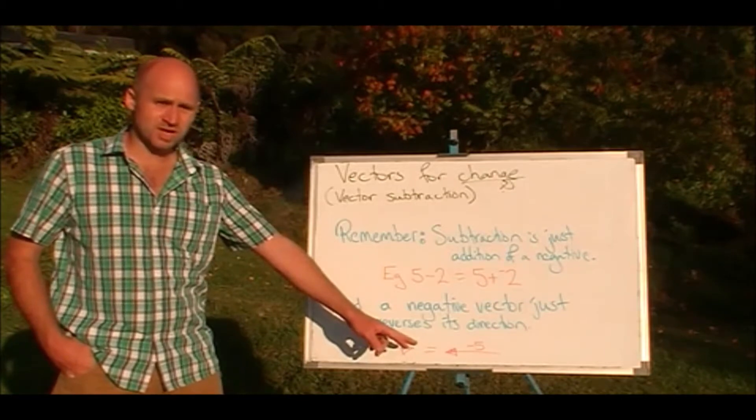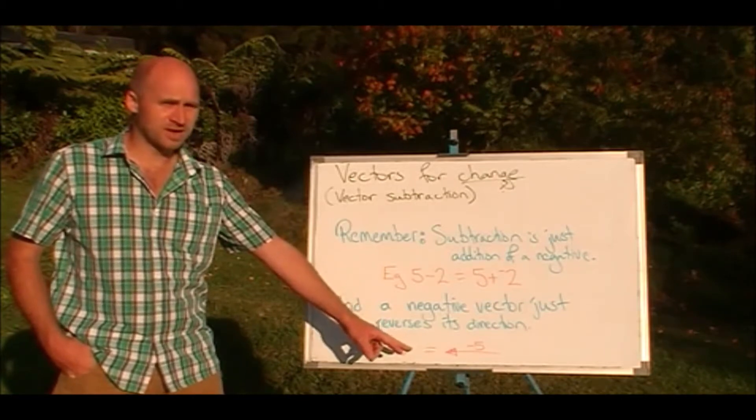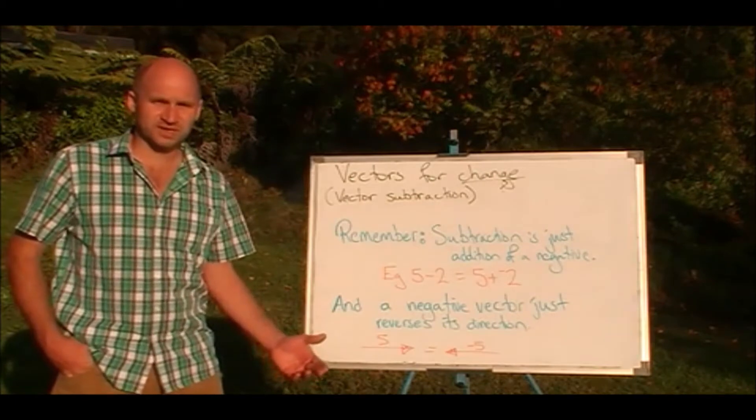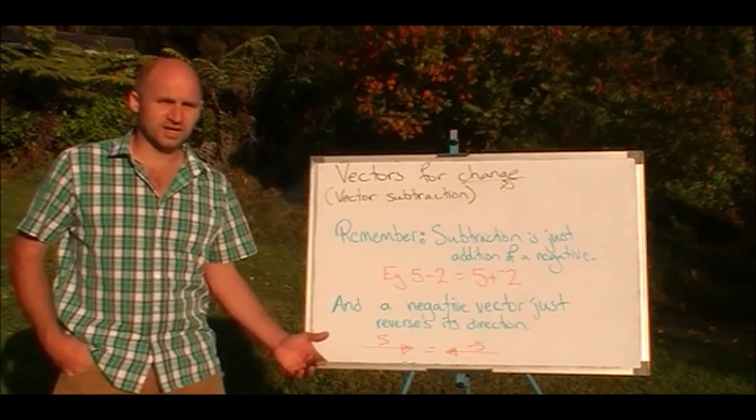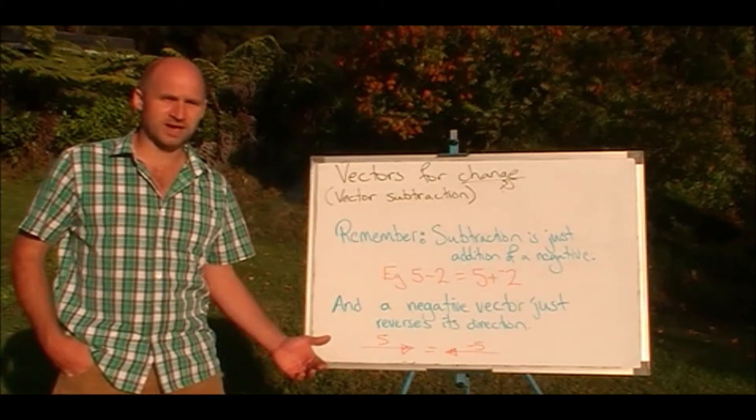So 5 to the right is the same as negative 5 to the left. Those are two key things that we've got to know. And that's going to let us just turn vector subtraction into vector addition of a round the other way vector.